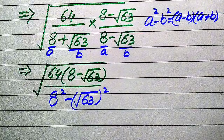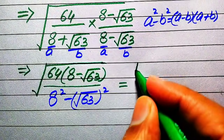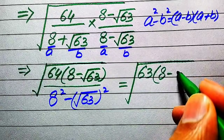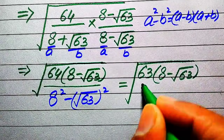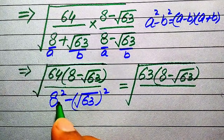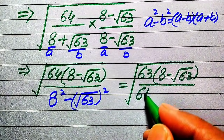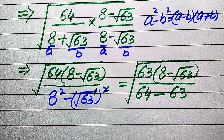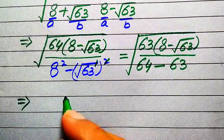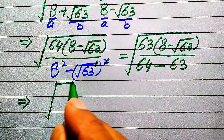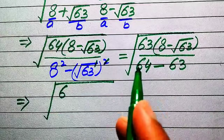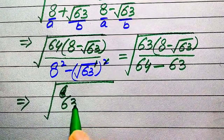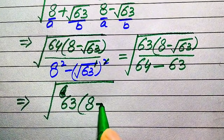In the next step we simplify further. The numerator is square root of 63 times (8 minus square root of 63). In the denominator, 8 squared becomes 64, minus 63 — the square and square root cancel — leaving 64 minus 63, which equals 1. So we get the square root of 64 times (8 minus square root of 63) in the numerator.